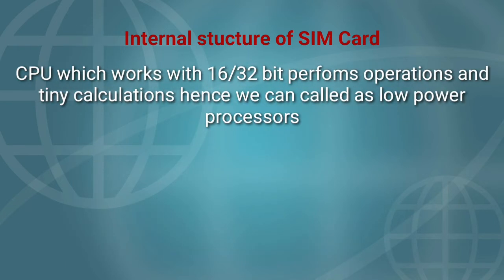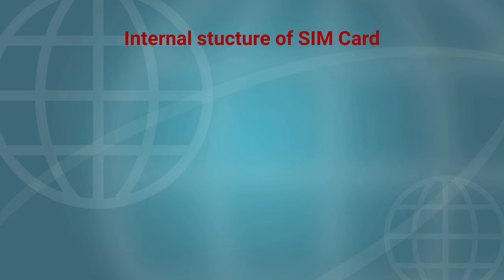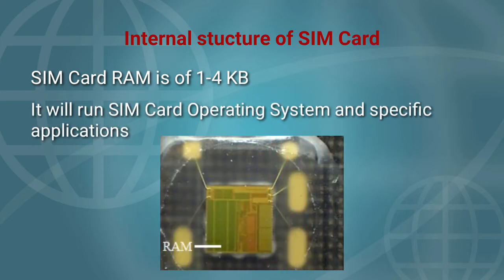The CPU, which works with 16 or 32 bit, performs operations and tiny calculations — hence we can call it a low-power processor. SIM card RAM is of 1 to 4 kilobytes. It runs the SIM card operating system and specific applications.